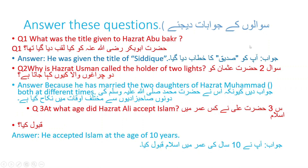Answer these questions. Question 1: What was the title given to Hazrat Abu Bakr? Answer: He was given the title of Sadiq. Aap ko Sadiq ka khatab diya gaya. Question 2: Why is Hazrat Usman called the holder of two lights? Answer: Because he married two daughters of Hazrat Muhammad SAW, both at different times. Question 3: At what age did Hazrat Ali accept Islam? Answer: He accepted Islam at the age of 10 years.